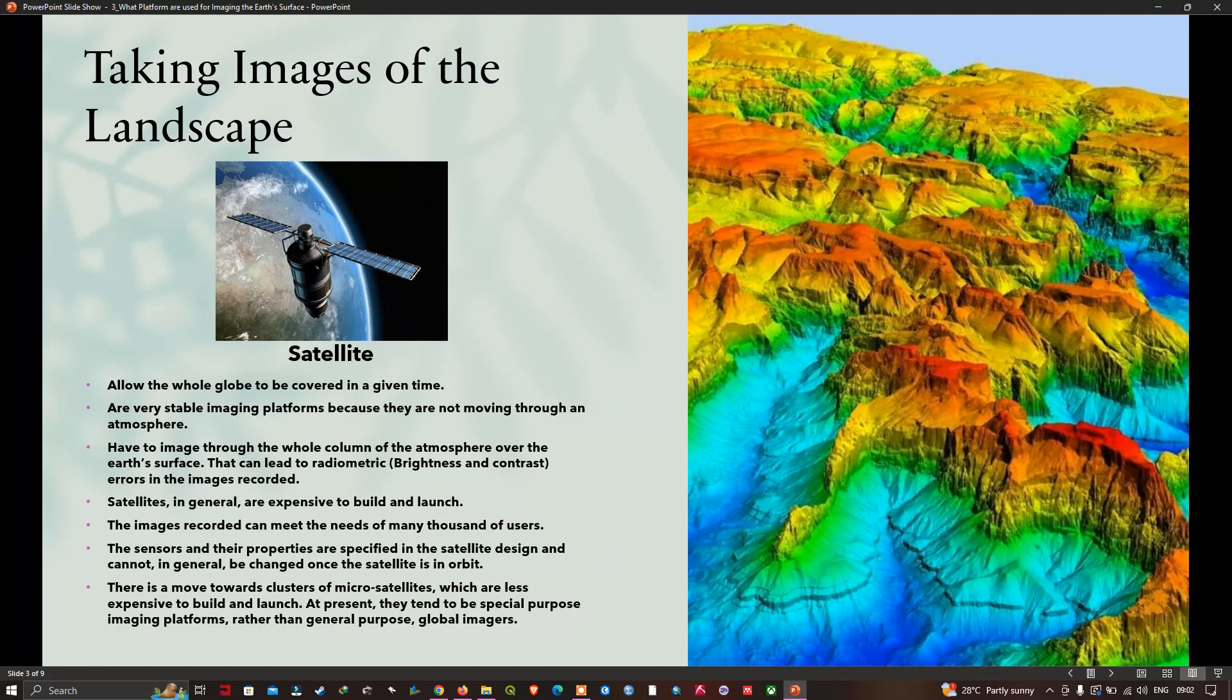There is a move towards a cluster of micro satellites which are less expensive to build and launch. At present they tend to be special purpose imaging platforms rather than general purpose global imagers.